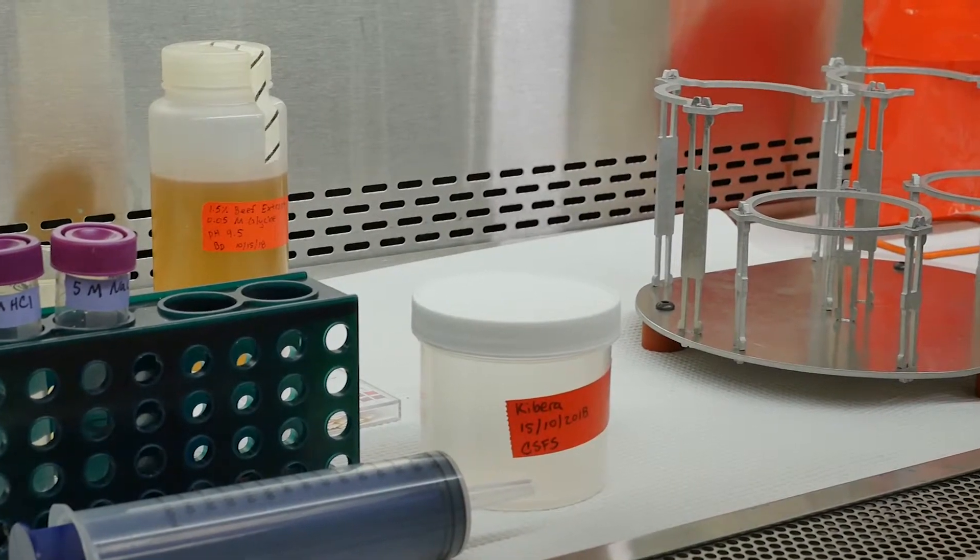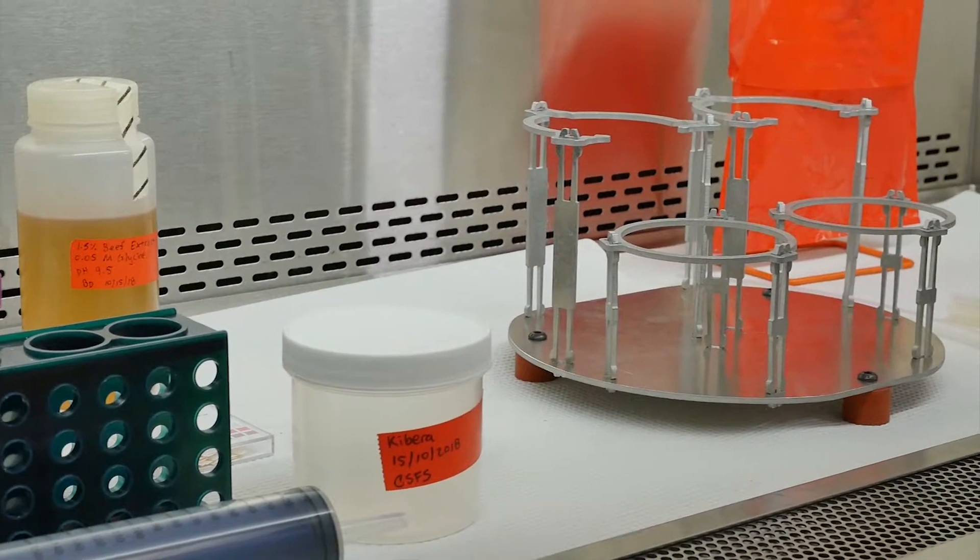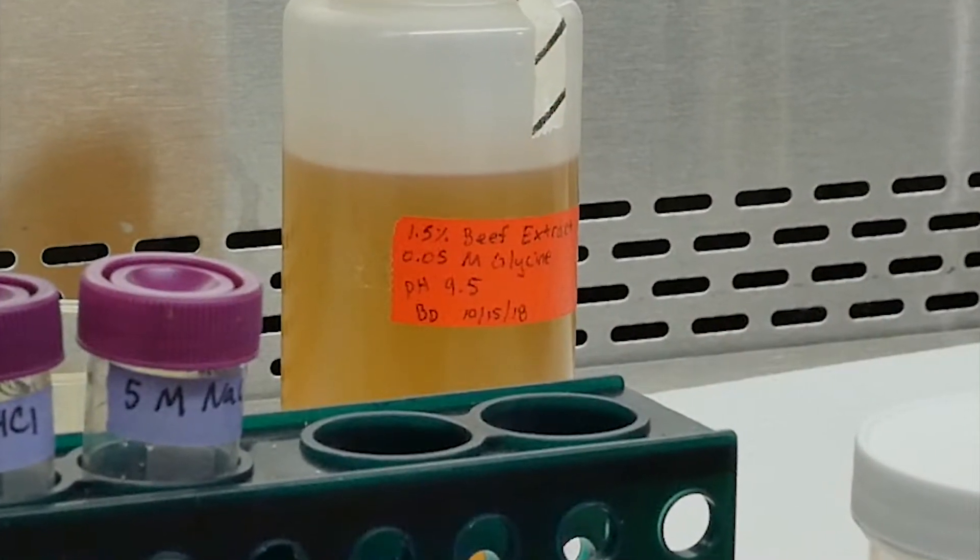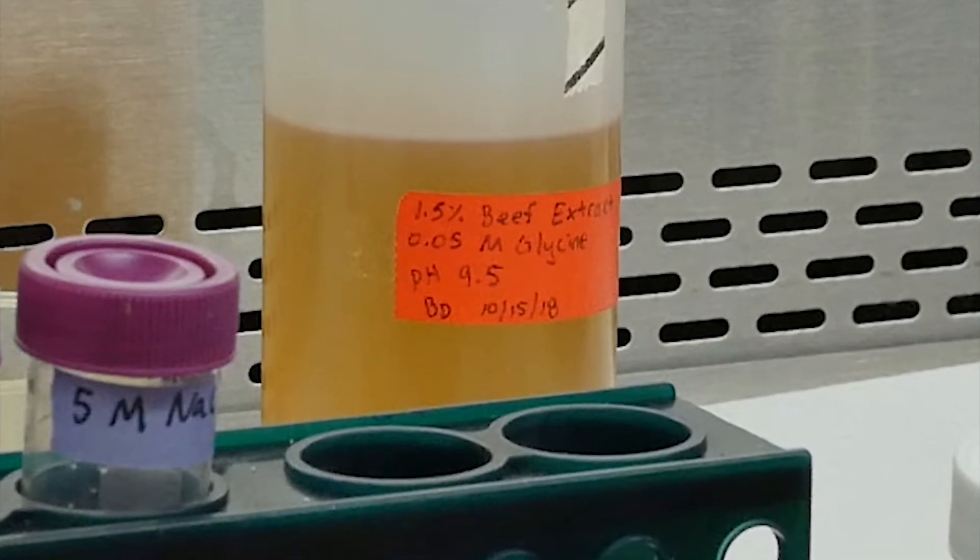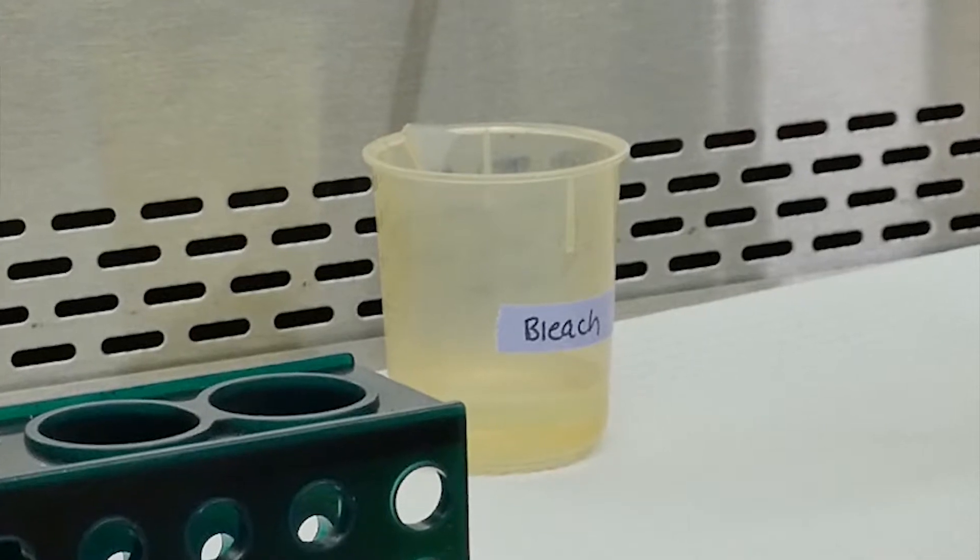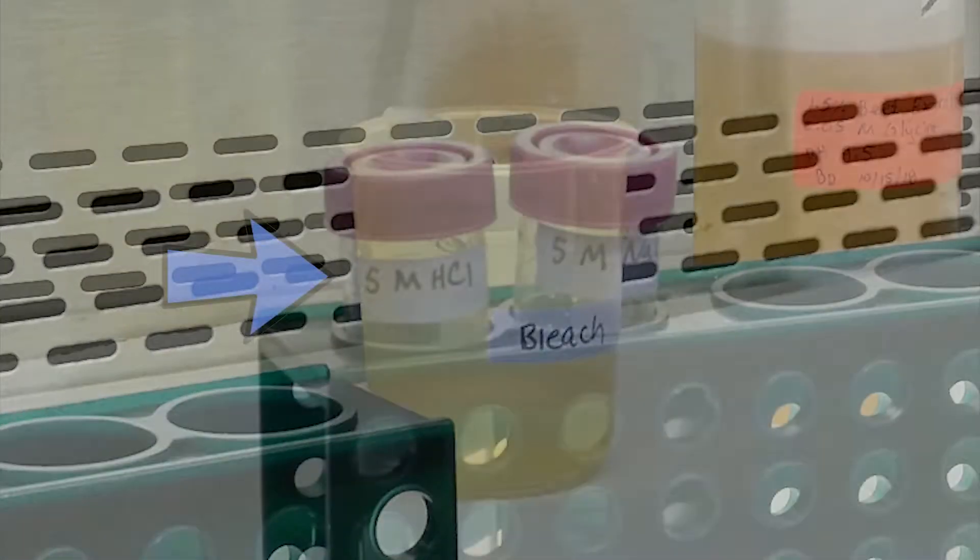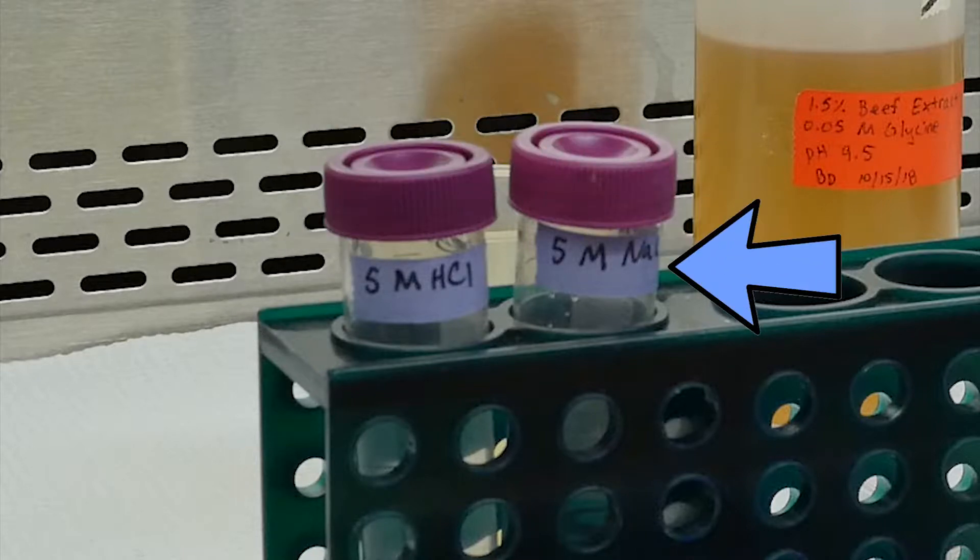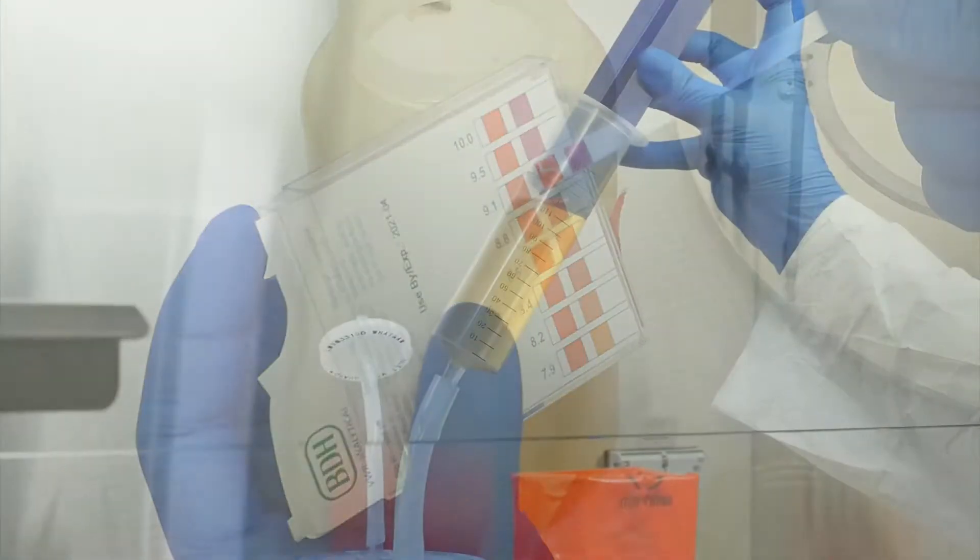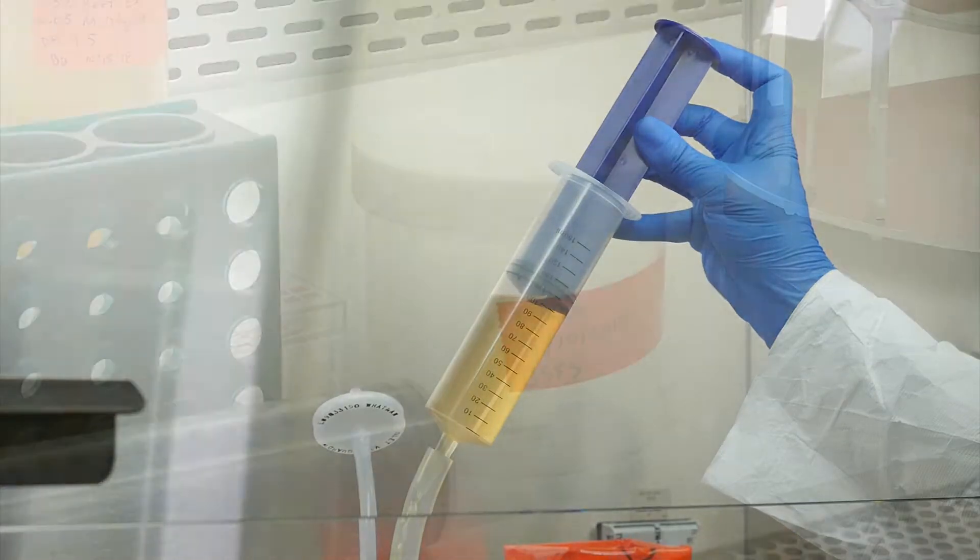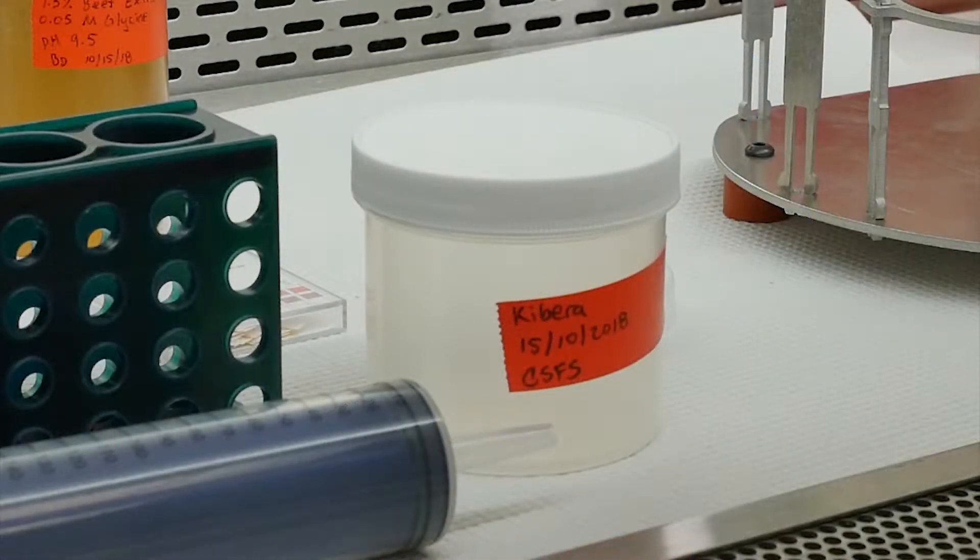You may then place the reagents and materials inside the biosafety cabinet, including 300 milliliters of sterile 1.5% beef extract with 0.05 molar glycine at a pH of 9.5, 50 milliliters of concentrated 5% bleach solution in a small beaker, 5 molar hydrochloric acid, 5 molar sodium hydroxide, pH strips with a range of 6.0 to 10.0, one syringe for eluent injection, a collection bottle with at least 300 milliliter capacity. This should be labeled with appropriate sample identification information, for example, include the filter ID, sampling location, date, and your initials.